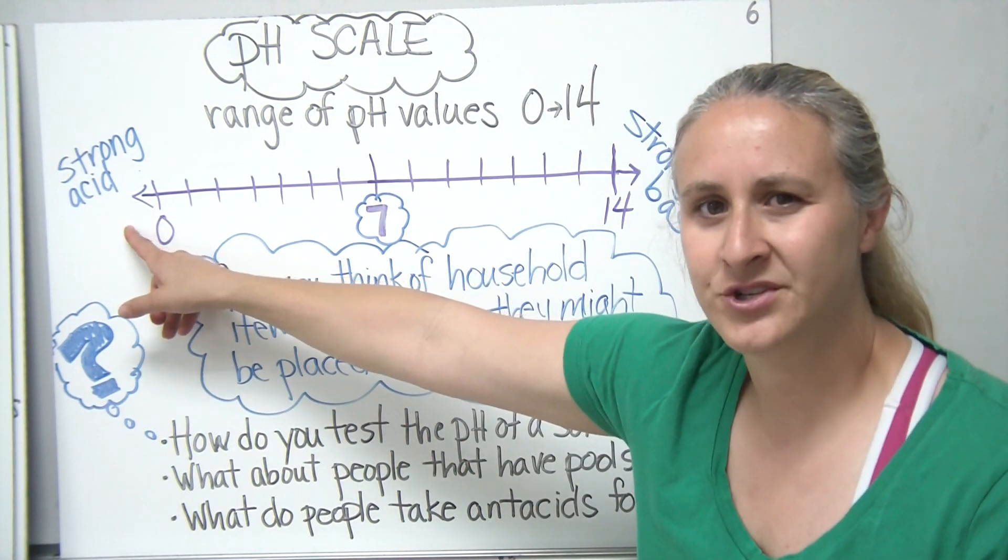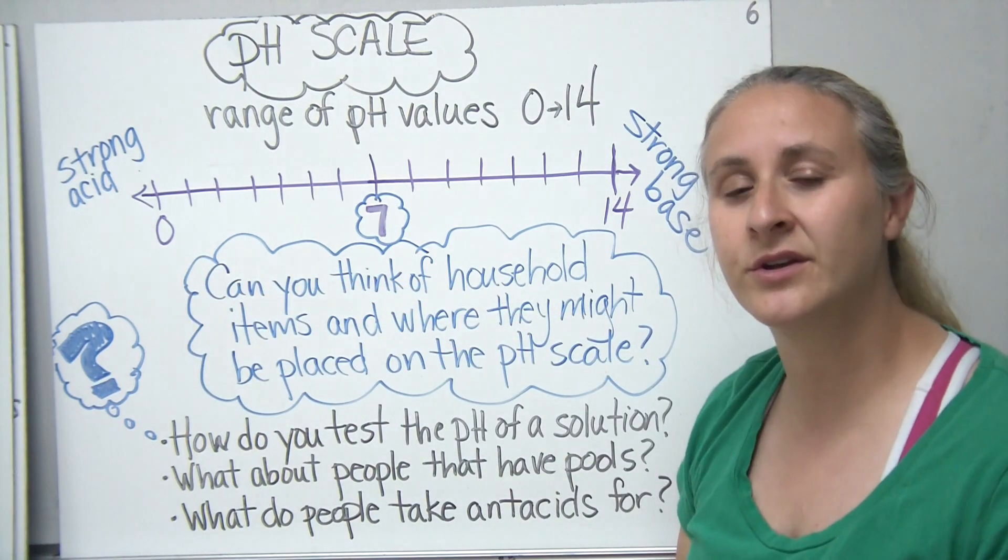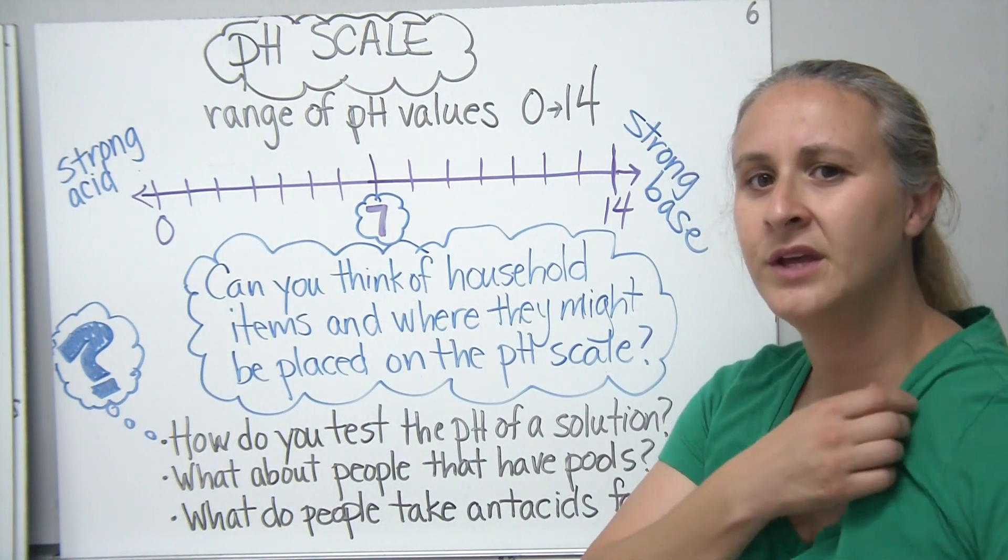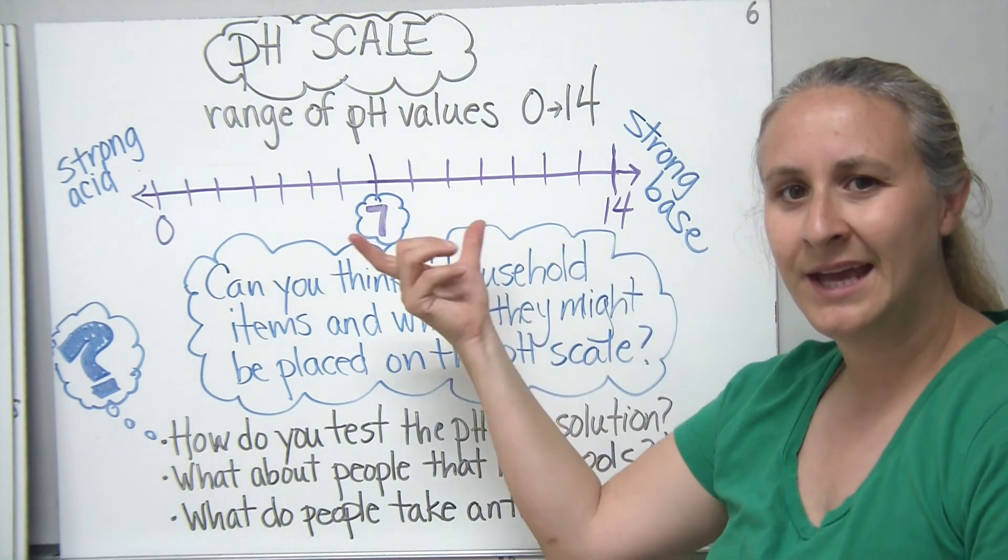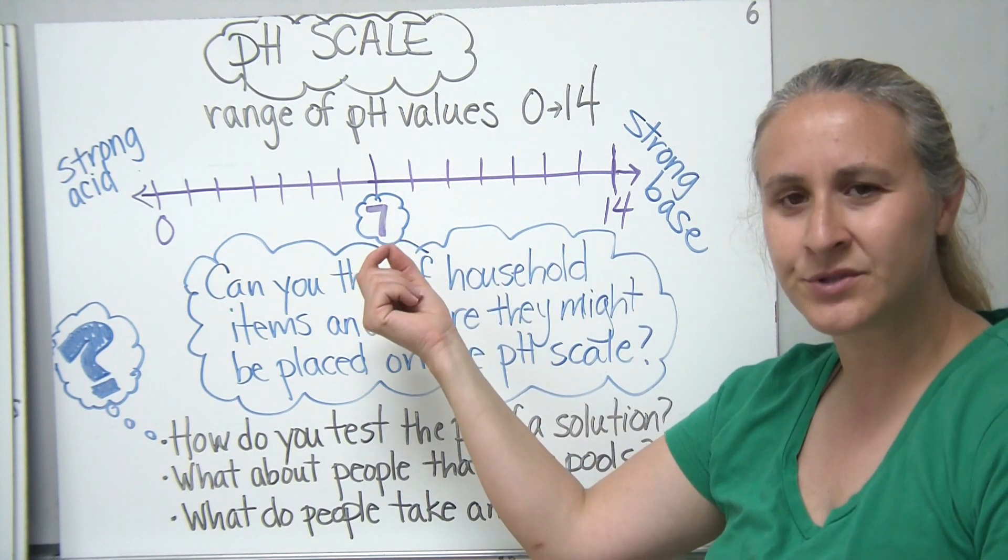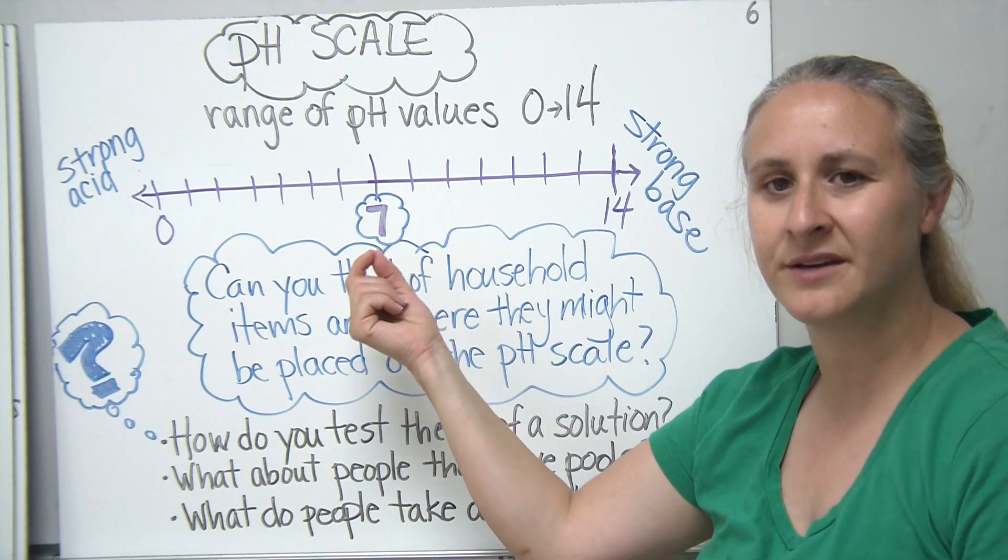Typically, when we look at our pH scale, the strongest acids are going to be closest to 0. The strongest bases are going to be closest to 14. And as you head closer and closer and closer to that neutral point of 7, the strong acids become weak acids and eventually neutral.